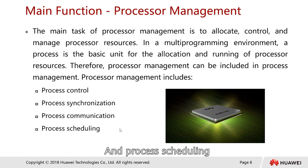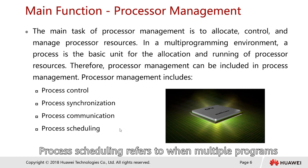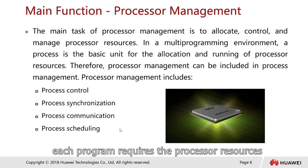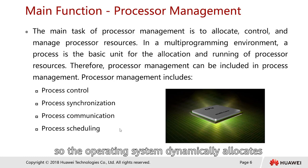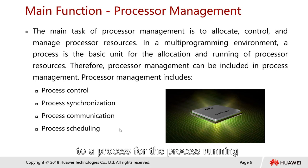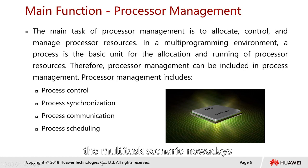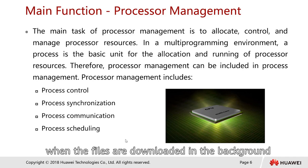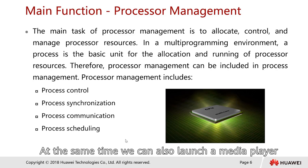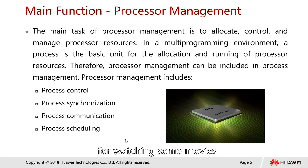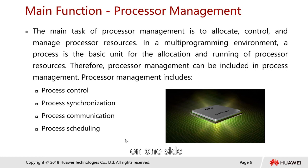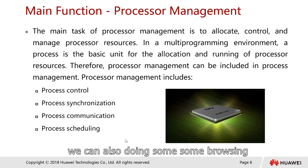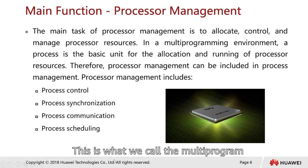We also have process scheduling. Process scheduling refers to when multiple programs run concurrently and each program requires processor resources. The operating system dynamically allocates the processor resources to processes for them to run. In today's multitasking scenario, for example, a browser can be downloading files in the background while at the same time we launch a media player to watch a movie, and also do some browsing in another window — this is what we call multitasking.